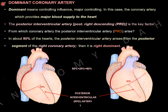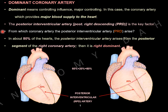Dominant coronary artery — what does that mean? Dominant means controlling influence, major controlling. In this case, the coronary artery which provides major blood supply to the heart. The posterior interventricular artery, posterior right descending (PRD), is the key factor. In about 80% of hearts, the posterior interventricular artery arises from the posterior segment of the right coronary artery — then it is right dominant.